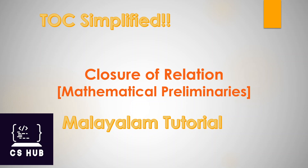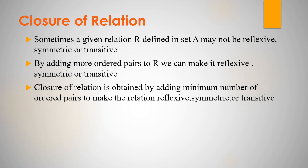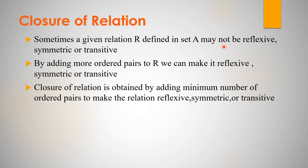The closure of relation covers the types of closures. What is this closure and what is its purpose? Sometimes a given relation defined in set A may not be reflexive, symmetric, or transitive. We are talking about reflexive, symmetric, or transitive properties.